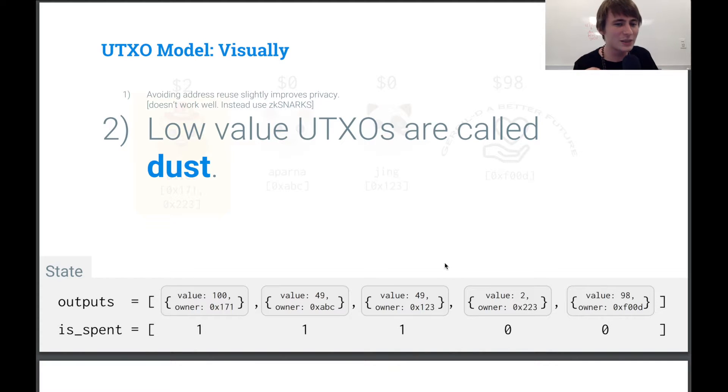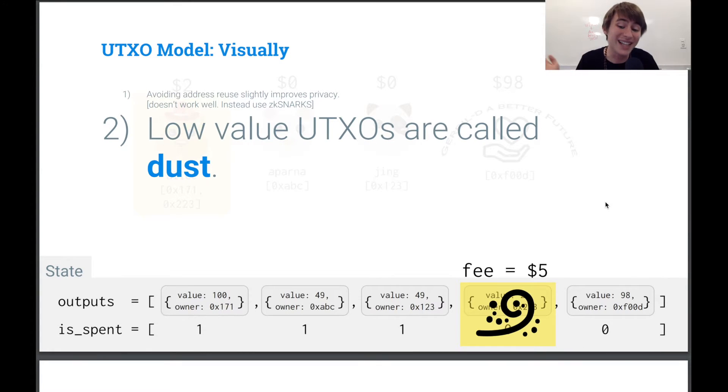So another thing that's important to note is that low value UTXOs are called dust. So what does that mean? Well, if we're trying to spend a UTXO and the fee to spend the UTXO is more than the UTXO itself, so in this case, the fee is $5 and our UTXO only has two, then it's called dust.